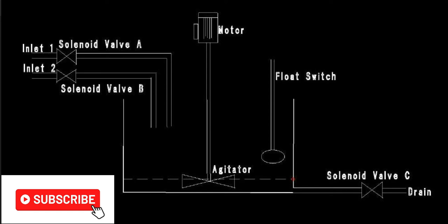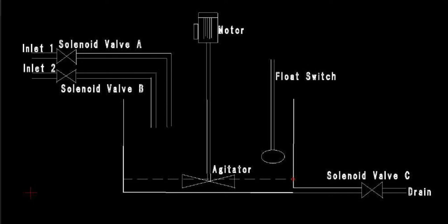Hello and welcome back to my YouTube channel. Today we are going to make a PLC program for a mixing tank. I have the diagram for the mixing tank where we have two solenoids for the two inlet valves — inlet one and inlet two. Each inlet has a solenoid valve: solenoid valve A and solenoid valve B. We also have the motor for agitation, a float switch, and solenoid valve C which is for the drain.